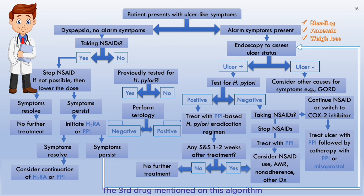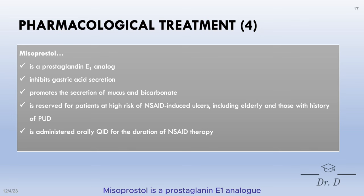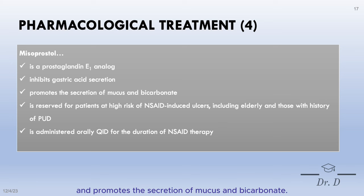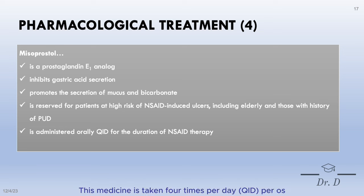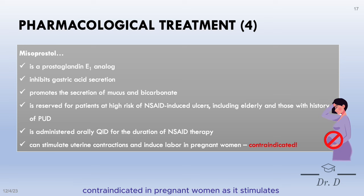The third drug mentioned in the algorithm is misoprostol, a prostaglandin E1 analog that inhibits gastric acid secretion and promotes the secretion of mucus and bicarbonate. Misoprostol is reserved for patients at high risk of NSAID-induced ulcers, including patients over 65 years of age and those with a history of peptic ulcer disease. This medicine is taken four times per day orally for the duration of NSAID therapy. Misoprostol is totally contraindicated in pregnant women as it stimulates uterine contractions and may induce labour.